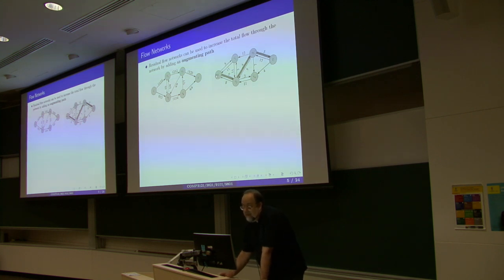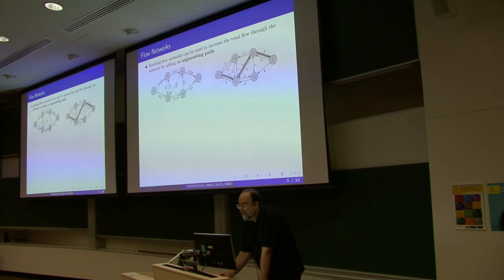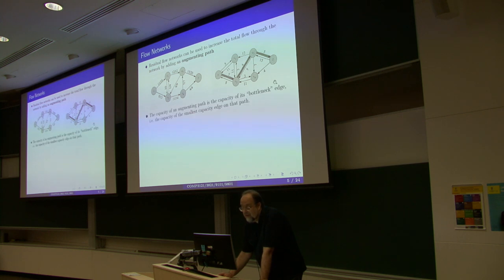In one possible algorithm, you simply look for augmenting paths, find the bottleneck — the minimum capacity edge on the path — and increase the flows accordingly. For example, if you have capacities of 5, 4, and 5 along a path, the bottleneck is 4, so you can increase the flow through the network by 4 units along these edges.